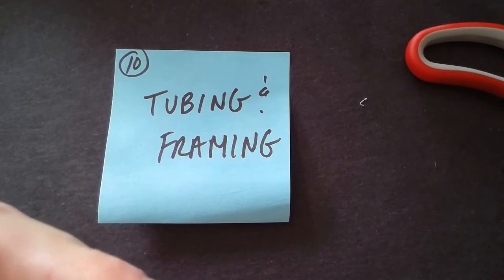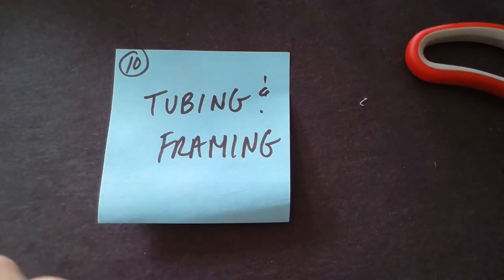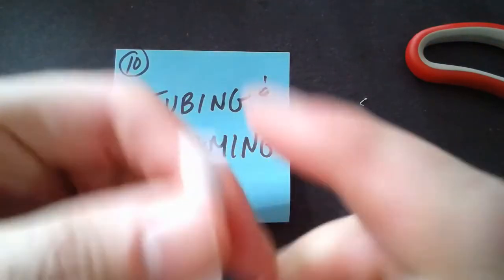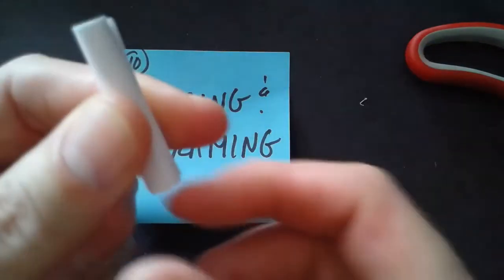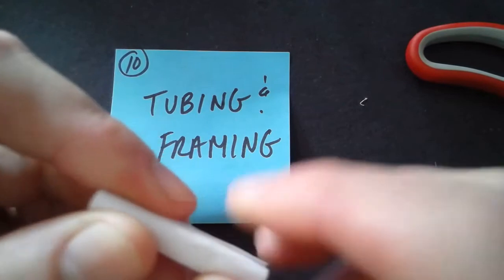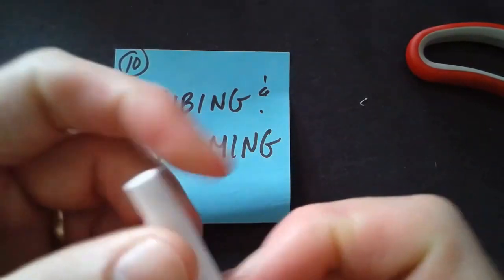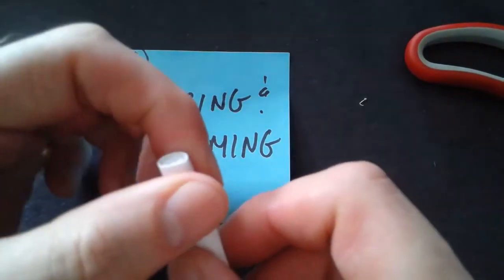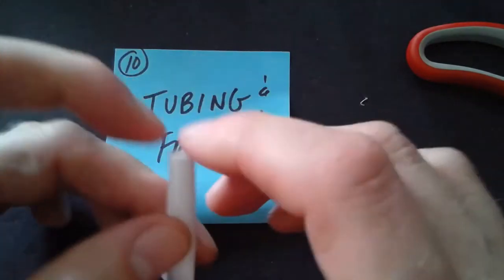So if I am making a person, if I make two tubes like this and two longer tubes, there could be legs. Then I have put together pieces that will become arms and legs of the body.